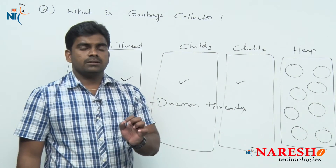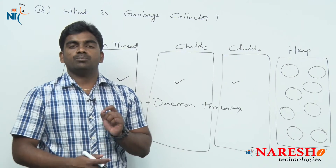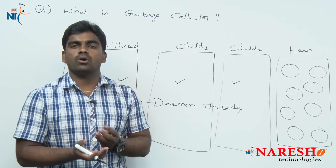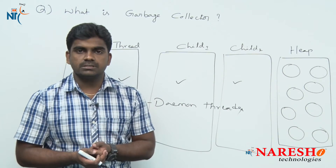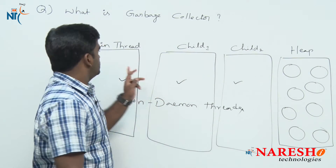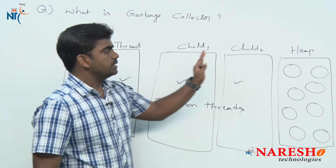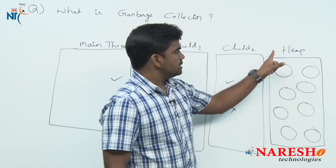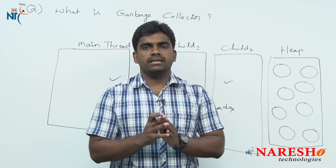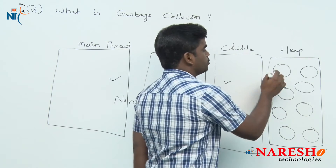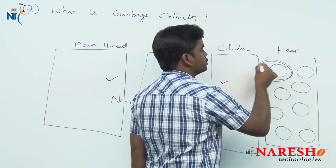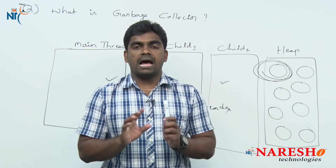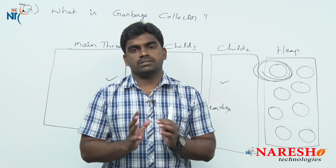The garbage collector daemon thread provides service to all non-daemon threads. Non-daemon threads execute application logic. The main thread and child threads create objects inside the heap area. If an object has been created but no one is pointing to it or using it, it is unreferenced.